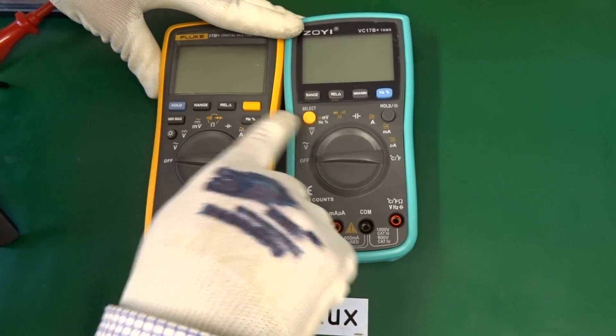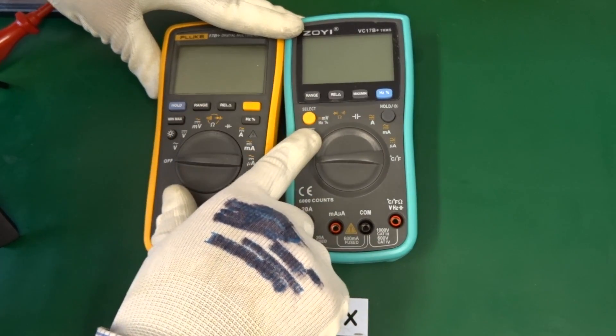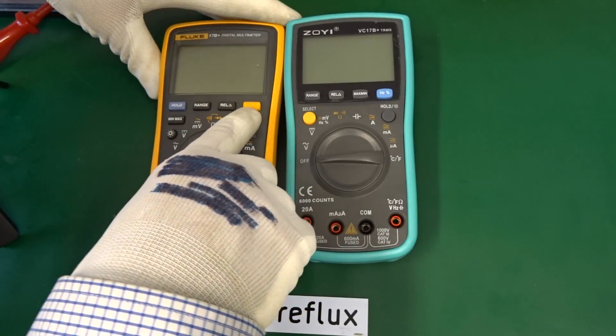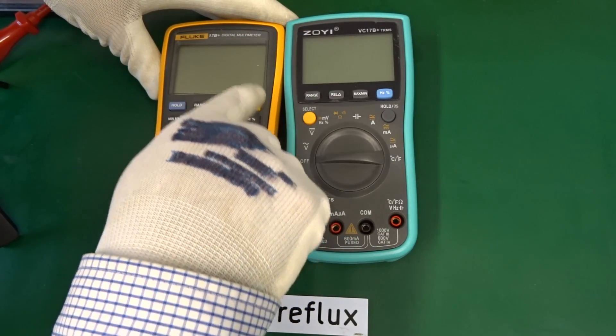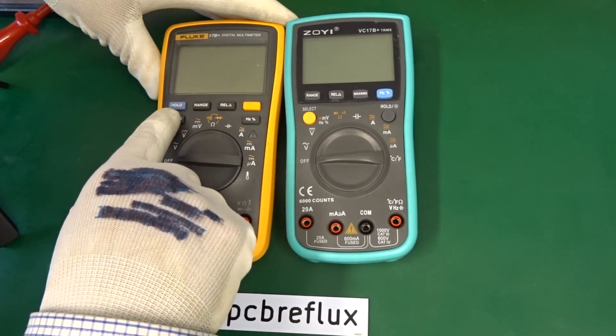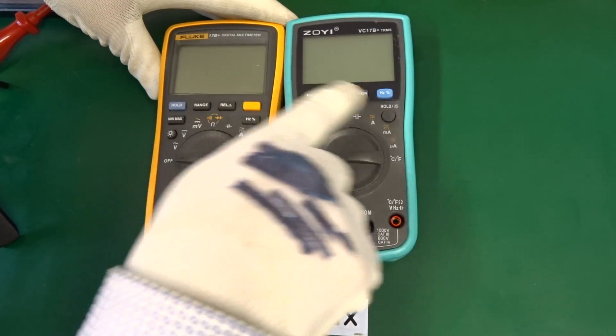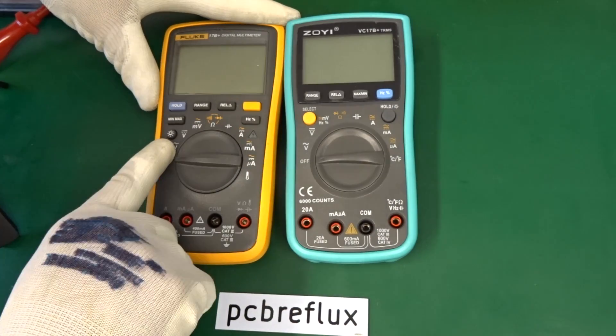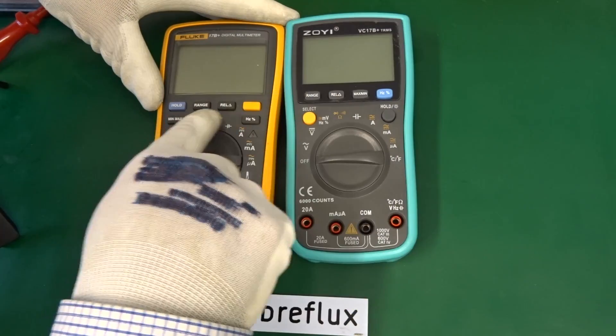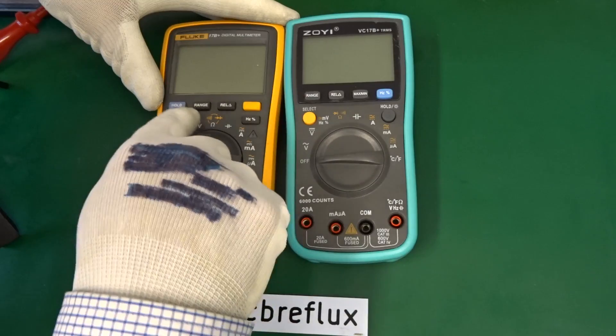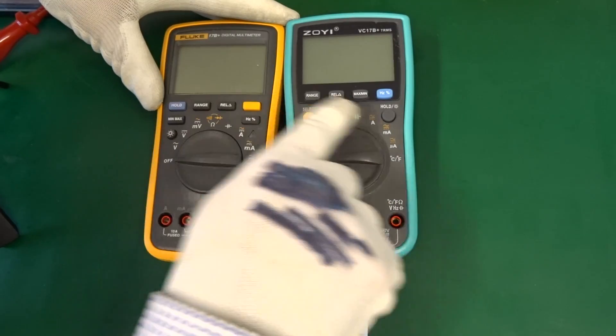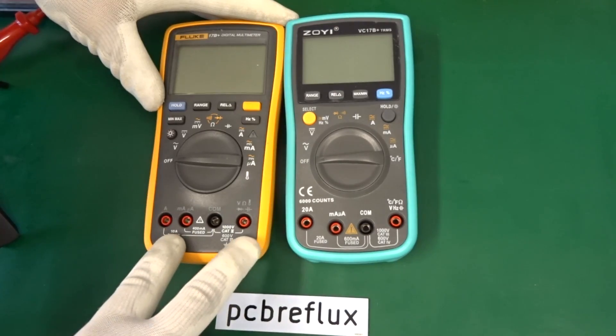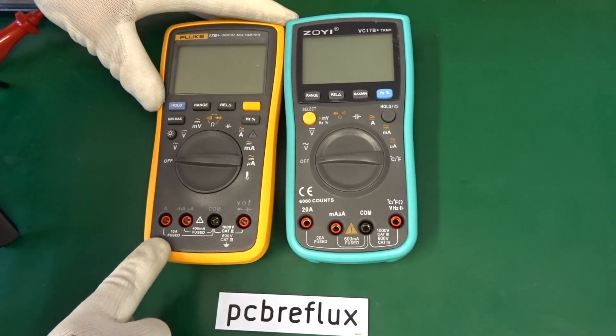So the other switches are a little bit different. We have here a select switch that is not marked on the Fluke, but it's also an orange button. We have a hold button here. That's also the backlight. Here we have an extra switch for the backlight and a relative button, a range switch, and also a min-max button. And also the position of the lead plugs are very similar.